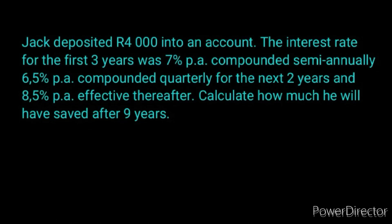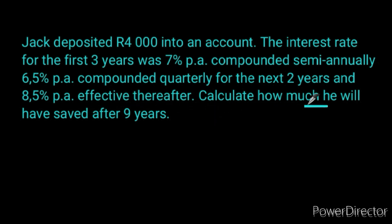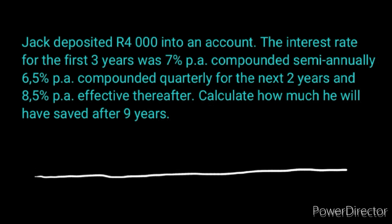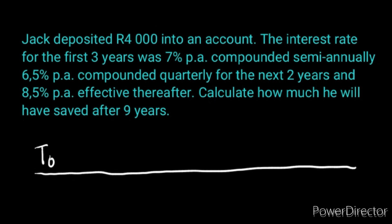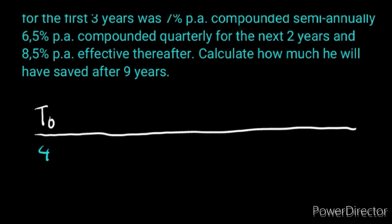Here is the first question. This question can be done without a timeline, however we are going to use a timeline at the basic level so that you will understand it when we go to the other level. The scenario says Jack deposited 4000 into an account. The interest rate for the first three years was 7% per annum compounded semi-annually and 8.5% per annum effective thereafter. They said calculate how much he will have saved after 9 years. We'll draw a timeline starting from T0. Notice they said he deposited 4000, so we put 4000 at T0.